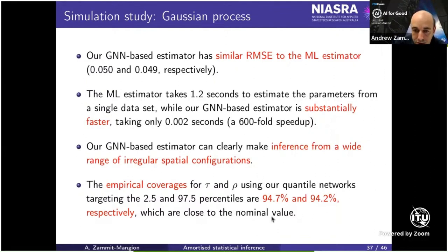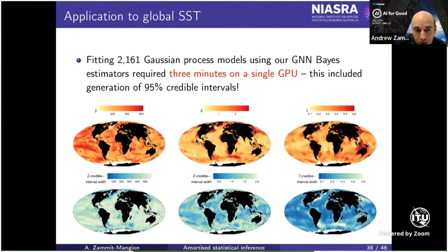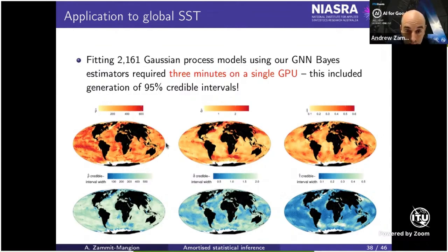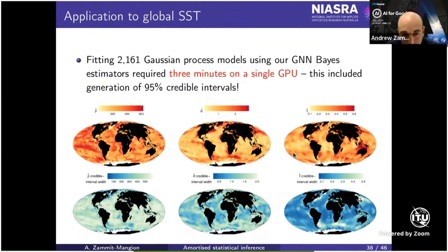We also get well-calibrated posterior uncertainties. Targeting 95% credible intervals, we empirically achieved 94.7% and 94.2% posterior coverage — very good. In the end, we fit 2,400 Gaussian processes on a single GPU in three minutes, which would take much longer without amortization. The result is maps of estimated length scale, variance, and measurement error variance across the globe, along with credible interval widths for all three parameters.